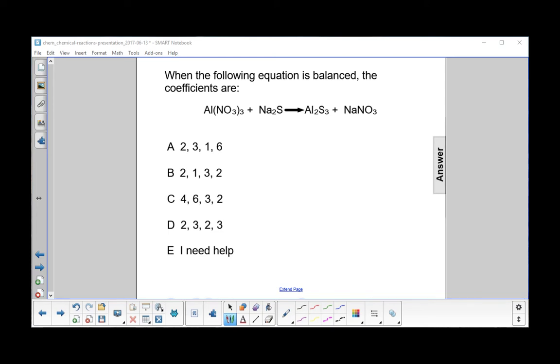When the following equation is balanced, what are the coefficients? So let's start by writing the elements that are in play here. We have aluminum, nitrogen, oxygen, sodium, and sulfur.